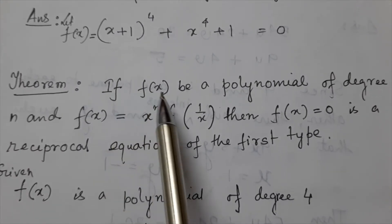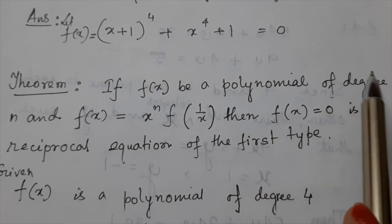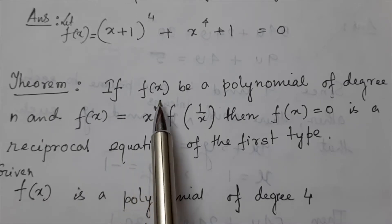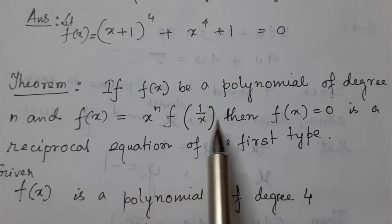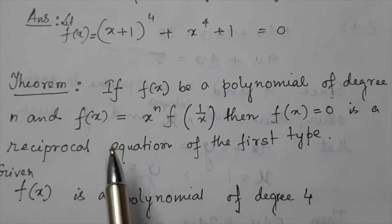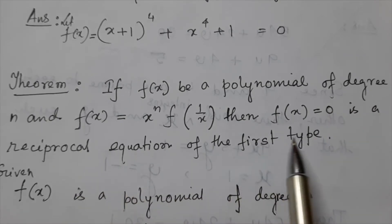If f(x) be a polynomial of degree n and f(x) equals x to the power n times f of 1 by x, then f(x) equals 0 is a reciprocal equation of the first type.